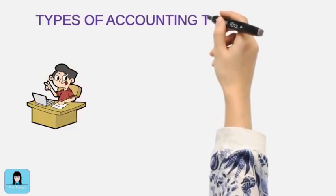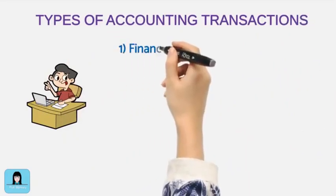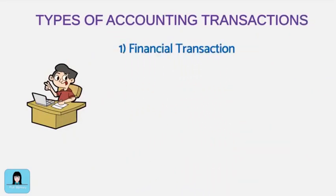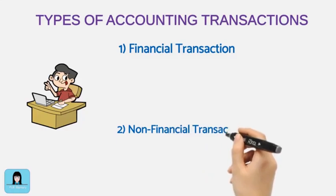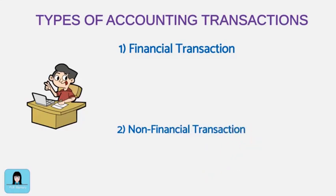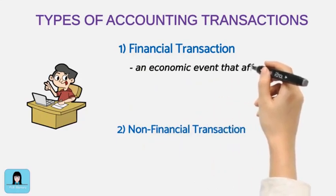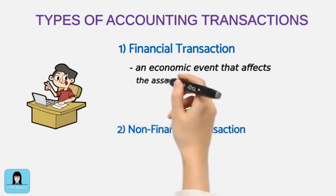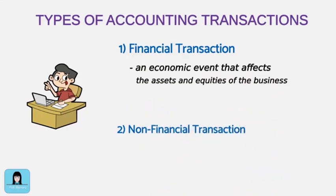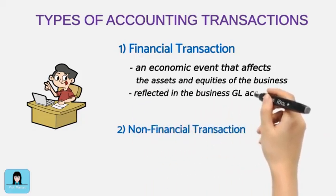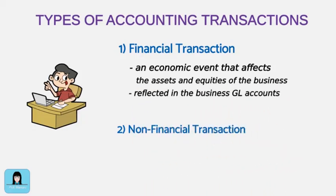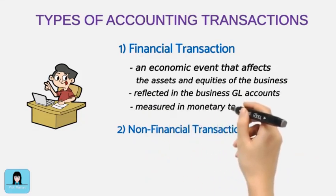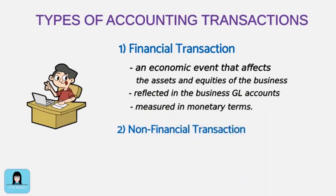There are two types of accounting transactions: financial transactions and non-financial transactions. A financial transaction is an economic event that affects the assets and equities of the business organization. It is recorded in general ledger accounts and measured in monetary terms such as pesos, dollars, and yens.